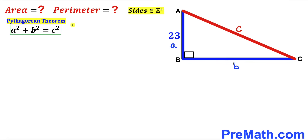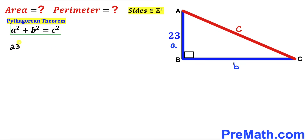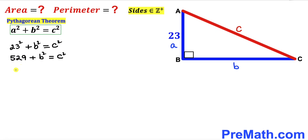Let's recall the Pythagorean theorem: a² + b² = c², where c is the hypotenuse and a and b are the two legs. Substituting our values: 23² + b² = c², which gives us 529 + b² = c². Moving b² to the other side, we get c² - b² = 529. Let's label this equation number one.